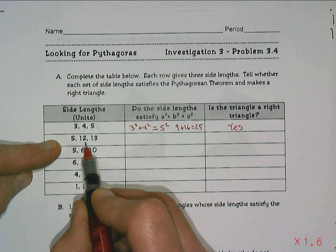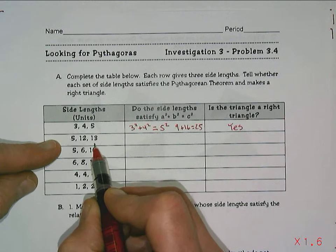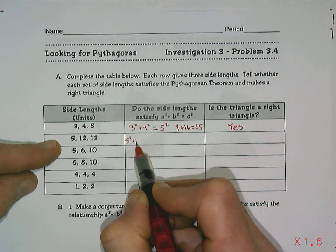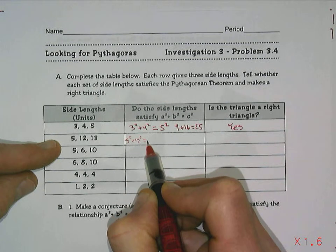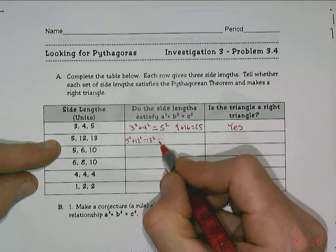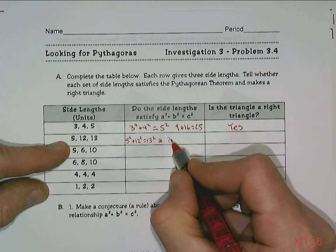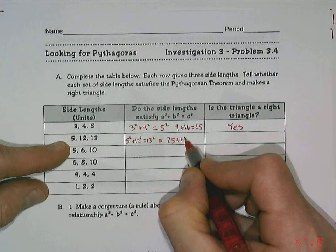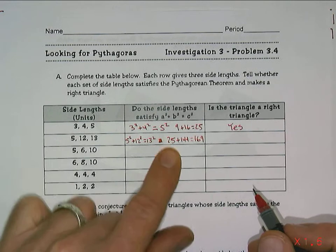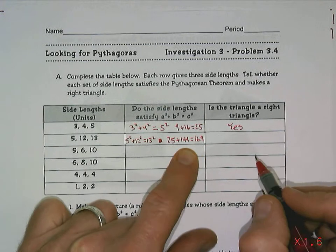In this case, if we have these three side lengths, 5, 12, and 13, and I said 5 squared plus 12 squared, does that equal 13 squared? If we do our calculations, 25 plus 144, the question is, does that equal 169?